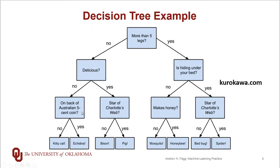This example captures a mix of numerical and categorical variables. The question about the number of legs refers to a numerical, ordinal value — it's integers. Other kinds of questions are more categorical: 'Is it hiding under your bed?' really has values of yes or no, with no numerical value there. Likewise, 'does it make honey?' is categorical. So the decision tree very naturally covers both numerical and categorical variables.